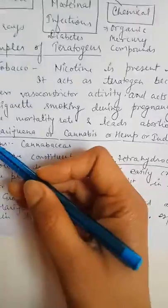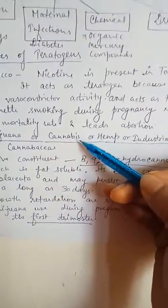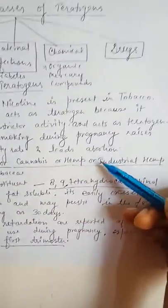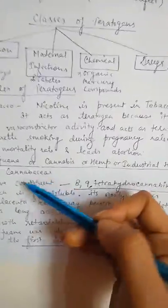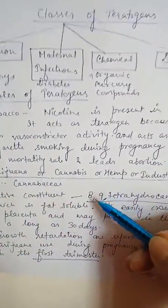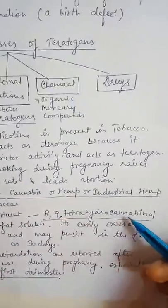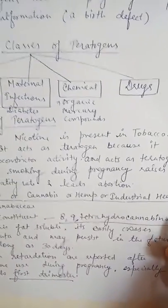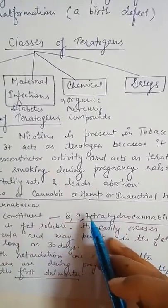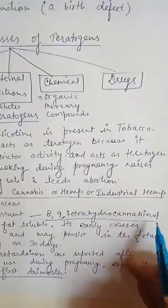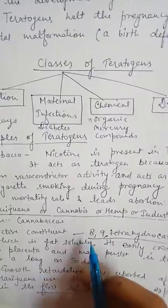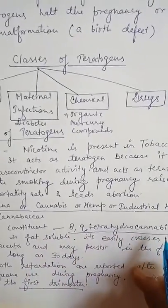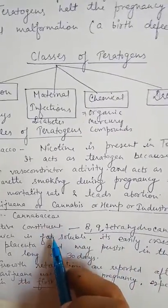The second example is marijuana, also called cannabis, hemp, or industrial hemp. It belongs to the family Cannabaceae. The active constituent present in cannabis is delta-9-tetrahydrocannabinol (THC). This delta-9-THC is fat soluble.